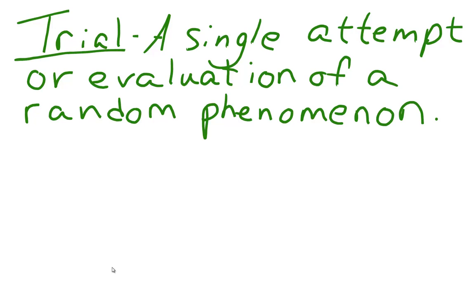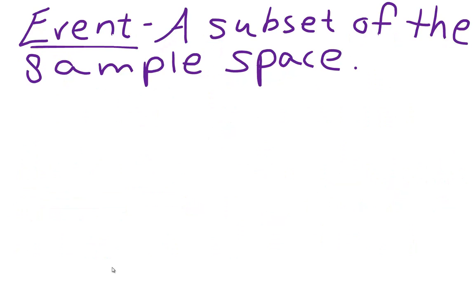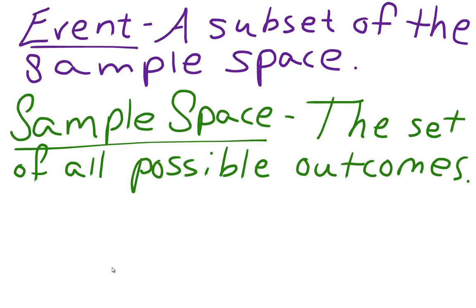Trial – a single attempt or evaluation of a random phenomenon. Outcome – the observable result for a particular instance of a trial. Event – a subset of the sample space. Sample space – the set of all possible outcomes.